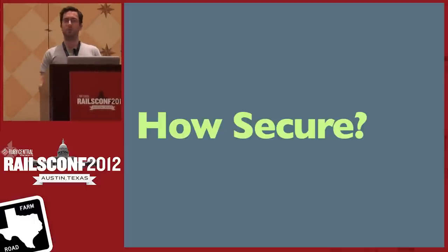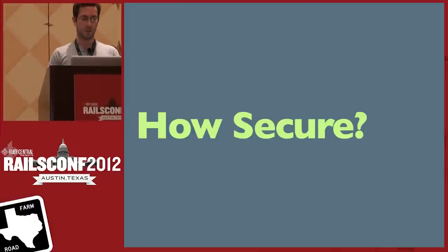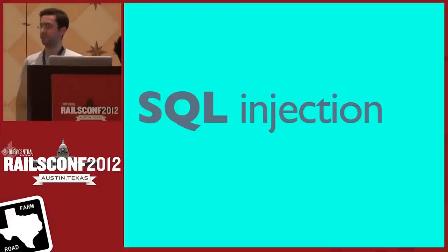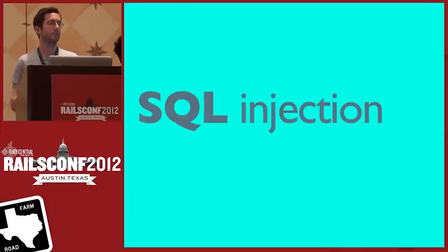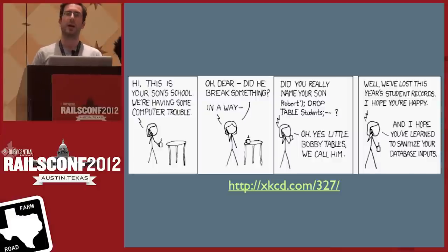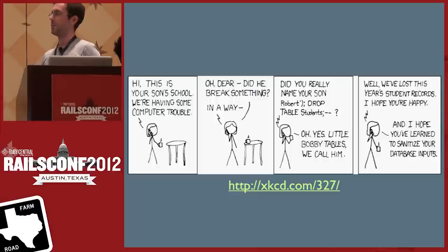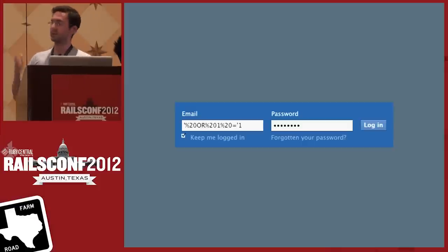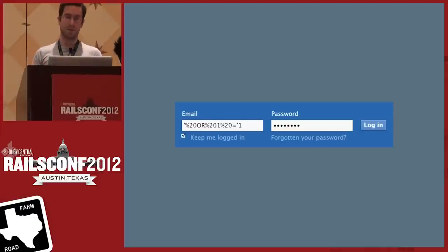I'm going to try and keep the examples relevant so you can apply these to your own applications fairly easily. The first topic I've chosen to look at is SQL injection, mainly because the Open Web Application Security Project names this as the number one risk for applications. SQL injection is when a malicious user is able to execute a SQL query against your database that you wouldn't want them to, by supplying portions of SQL in a form field or a GET parameter.